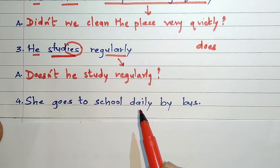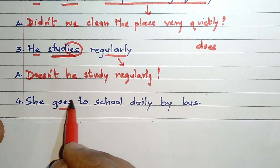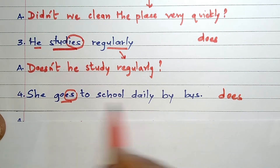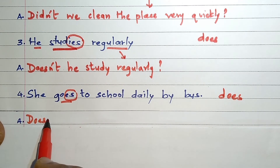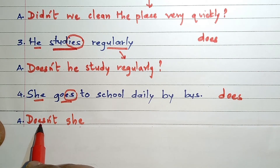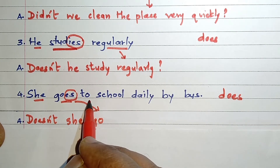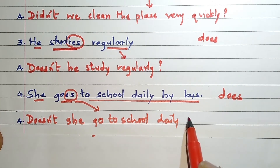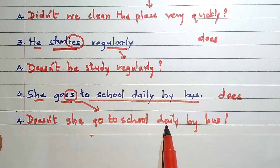'She goes to school daily by bus.' The verb 'goes' shows that the sentence is in present tense, and it is ending with E-S, so we have to assume 'does' as the helping verb. The sentence is affirmative, so our interrogative answer will begin with 'doesn't' — it will become negative. Followed by the subject 'she'. We use the root verb of 'goes', that is 'go'. The remaining part, 'to school daily by bus', is copied, followed by a question mark: Doesn't she go to school daily by bus?